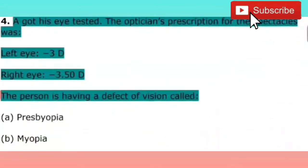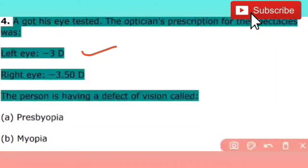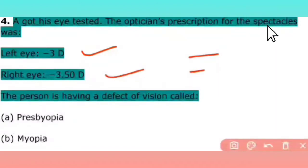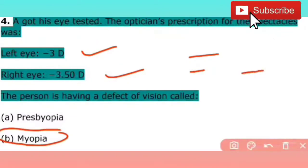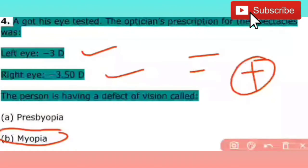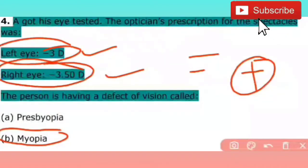The next question: a man got his eye tested. The optician's prescription for spectacles was: left eye minus 3 D, right eye minus 3.50 D — D means diopter. The person is having a defect of vision. When you have a minus sign in the prescription, you have myopia. And hypermetropia means you cannot see near objects clearly; when you go for a check-up and the power is positive, it means your eyes have that weakness. So the right answer is B.